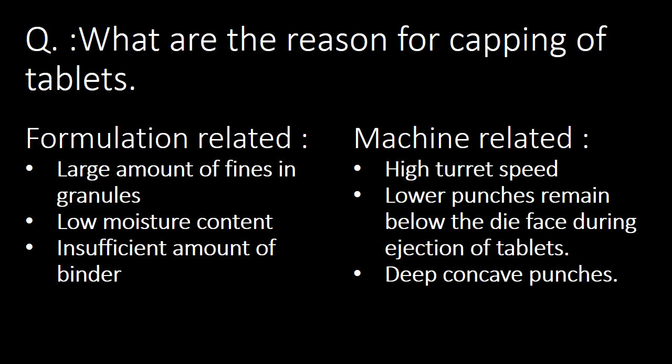Next important question: what are the reasons for capping of tablets? There are many reasons, broadly classified into two major classes: formulation-related issues and machine-related issues. Formulation-related causes include a large amount of fines in granules, low moisture content, and insufficient amount of binder. Machine-related causes include higher turret speed, lower punches remaining below the die face during ejection of tablets, and use of deep concave punches, which increases the probability of capping.